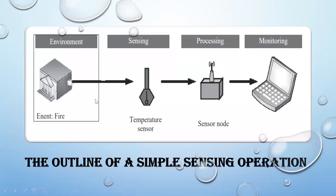Here you can see a simple sensing operation. Suppose a house catches fire — the event has happened. The temperature sensor will detect that there is some abnormal temperature in the environment. After sensing, it processes all the data and sends it to the central hub. If a fire is detected, it calls for emergency services, sending an alert to the relevant agency so they can monitor the sensor output and immediately reach that place. This is a simple sensor operation: sense, process, and monitor.